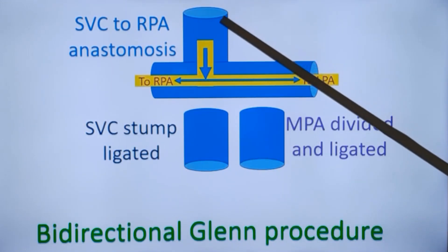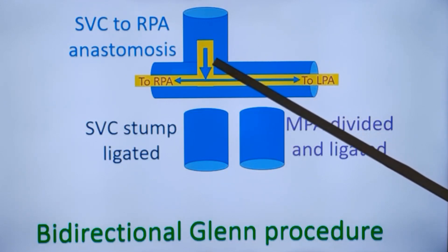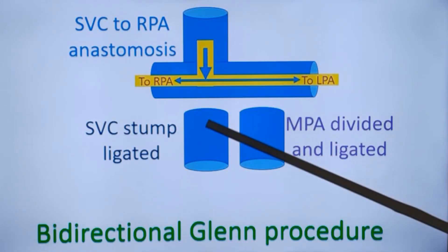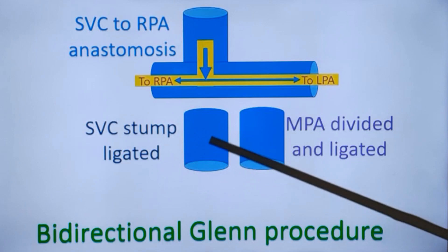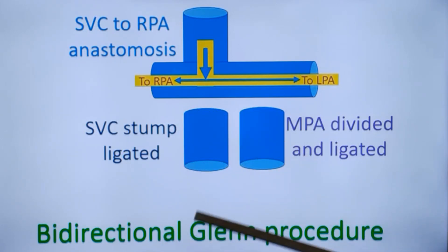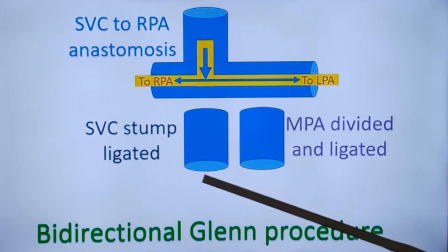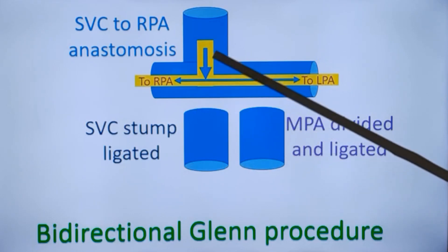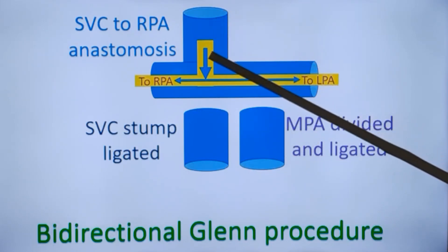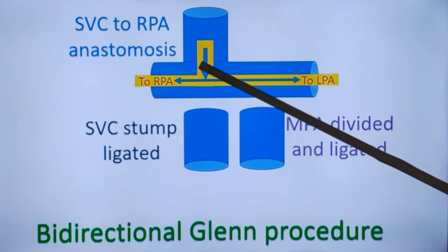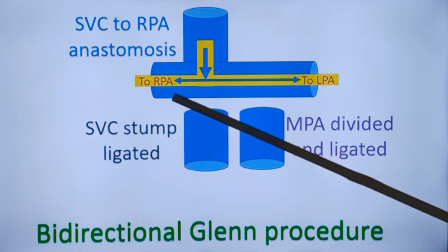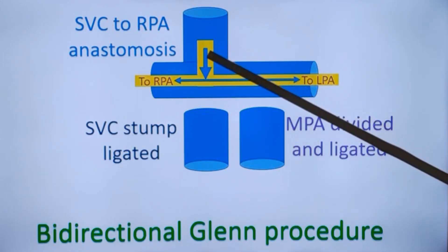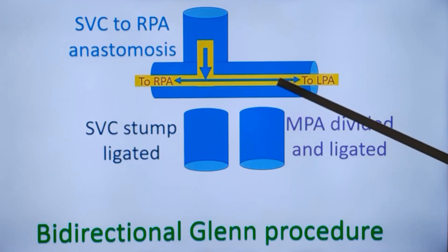You can see that the superior vena cava is anastomosed. It is divided first and this stump is ligated — this stump goes to the right atrium and is ligated here. The upper end is anastomosed to the right pulmonary artery in an end-to-side anastomosis.